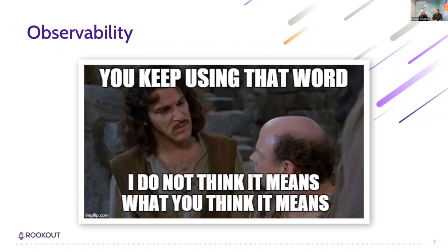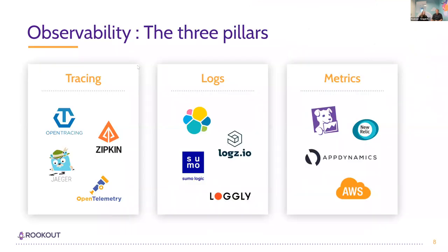Observability is the title of this webinar, and it's important that we are all on the same page about its definition. So what is observability? Observability is defined as our ability to see and understand inside the application. When the application has a problem, we want to be notified, we want to be alerted, and we want to be able to troubleshoot and get to the root cause of the problem as quickly as possible.